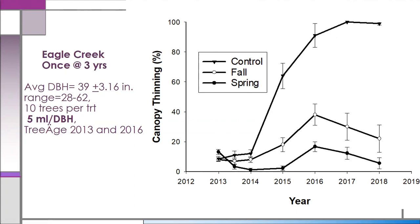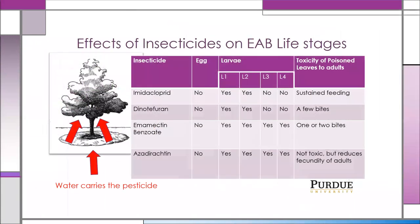When we looked at the product applied in the fall, which allowed larvae to feed for another whole summer, there was an actual cost of delaying it. Instead of a peak canopy thinning of 20%, it was actually 40% canopy thinning. So while you can suppress additional damage by injecting in the fall, when you are late in the invasion cycle you lose quite a bit compared to spring injection.